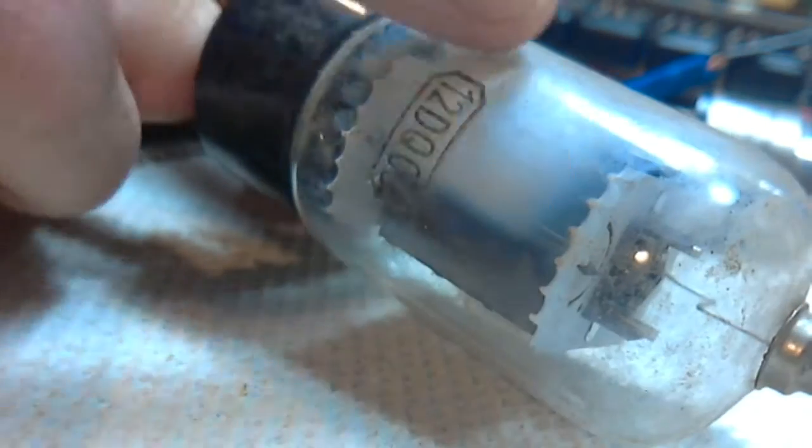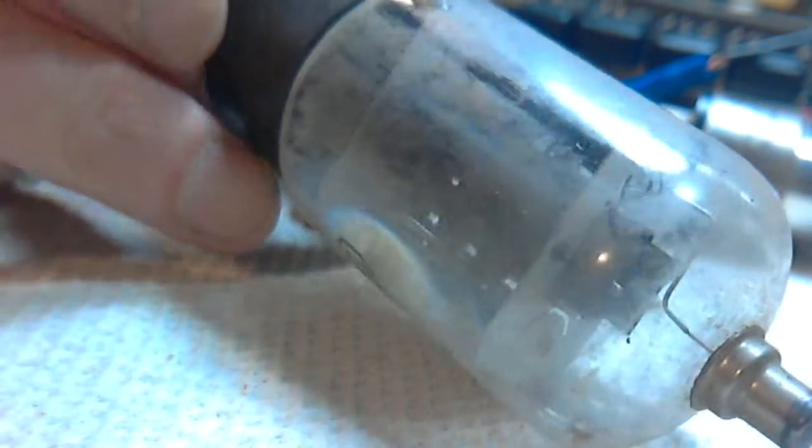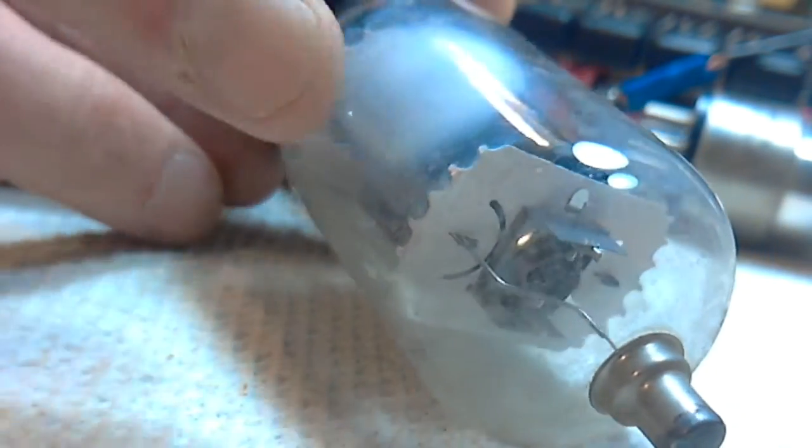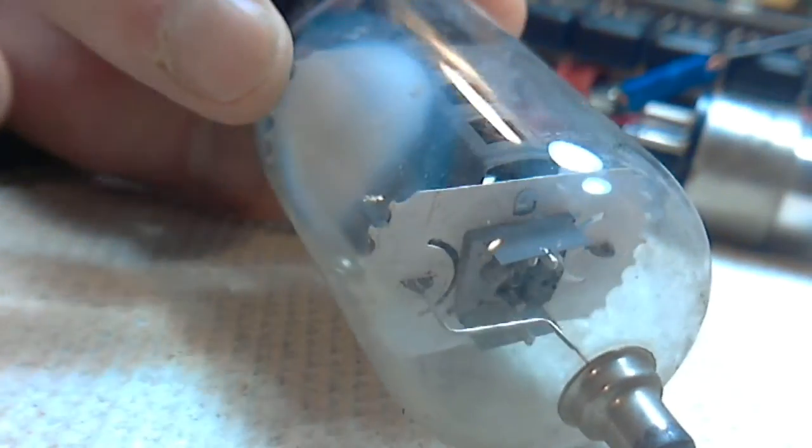So this one, you see the white color inside of it. That indicates that air has leaked into this tube somehow. You can't see how with that one.